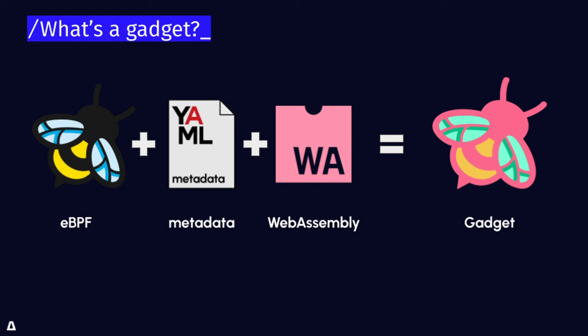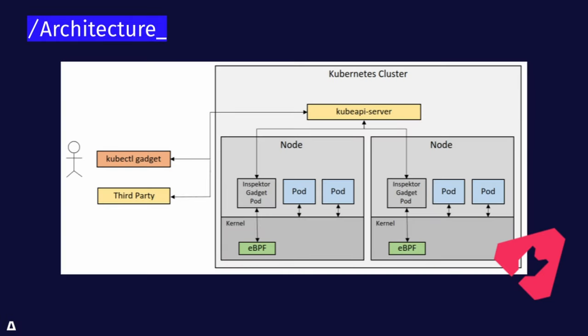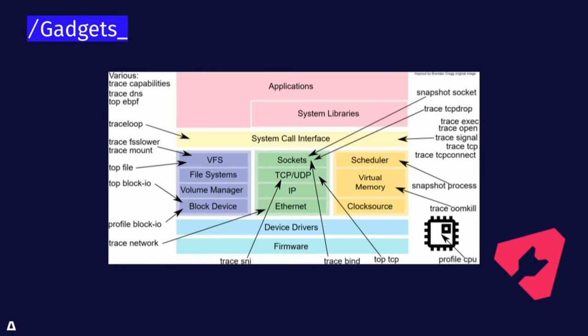For deploying this inside of Kubernetes, you have kubectl gadget or whatever third-party tool you create to interact with this. The API calls go through the API server and interact with the Inspector Gadget pod. This pod is deployed with kubectl gadget deploy and will run on all the nodes. Once you deploy that, you can run a particular gadget and the pod will take care of pulling it down and loading it. Inspector Gadget supports a lot of different types of gadgets.